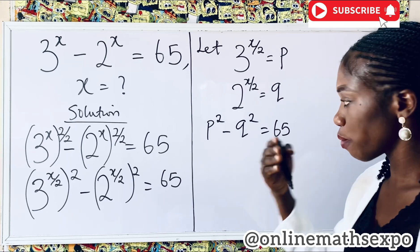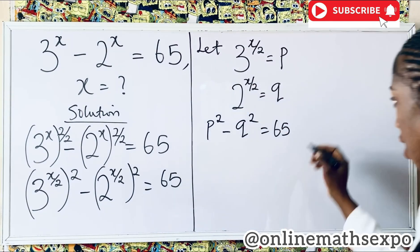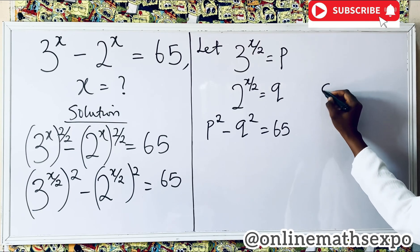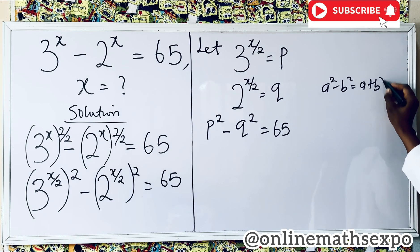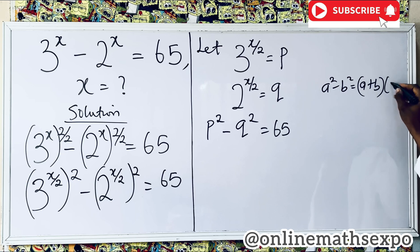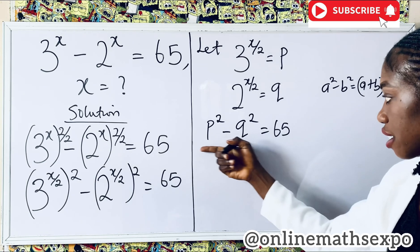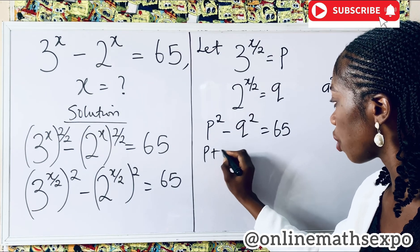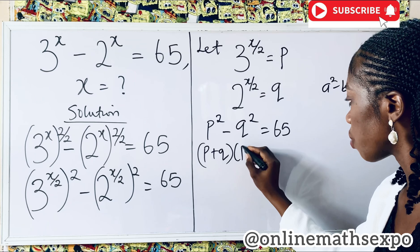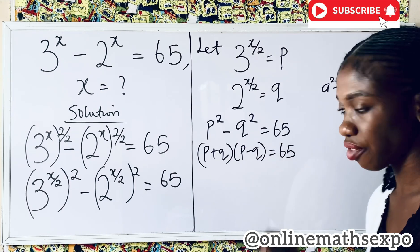Remind yourself of the difference of two squares rule: x squared minus p squared equals (x plus p)(x minus p). Applying that here, p squared minus q squared factors as (p plus q) times (p minus q), and that is equal to 65.